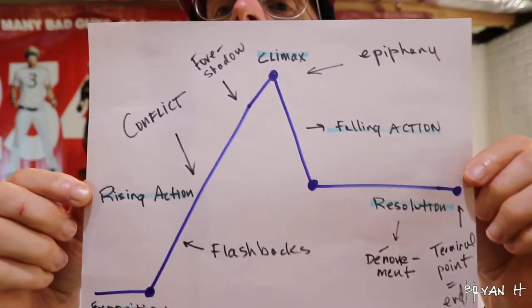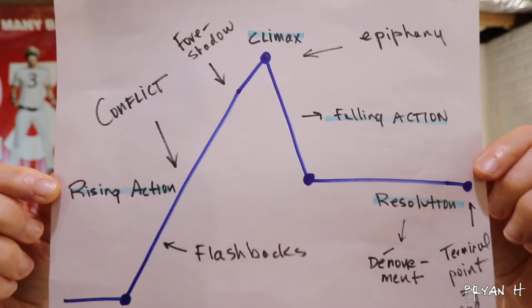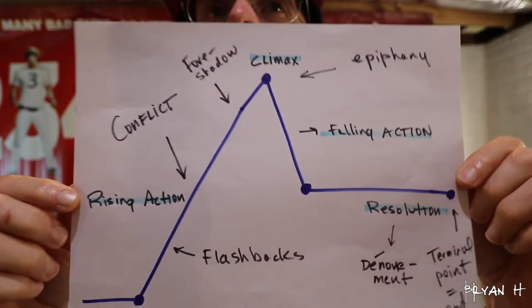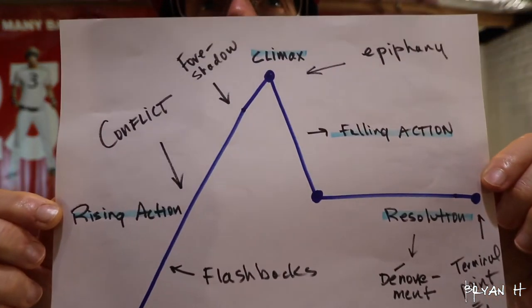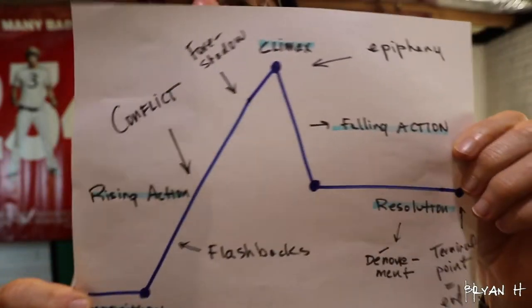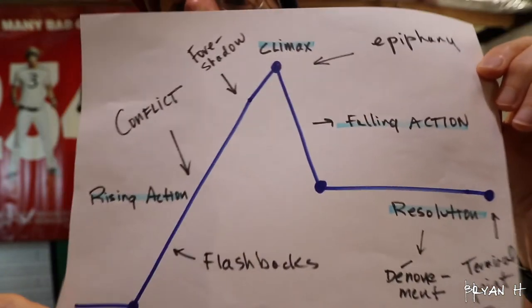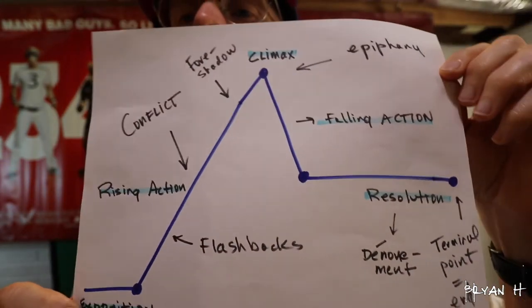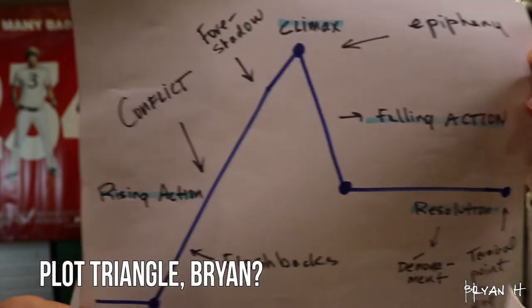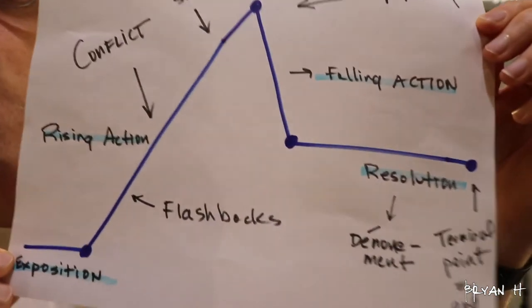Very often what the internet tells us — this is something called a plot mountain or something like that — kind of shows how a story goes, but this is kind of how it happens.